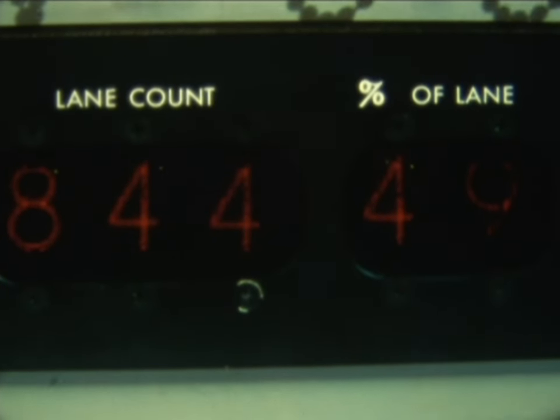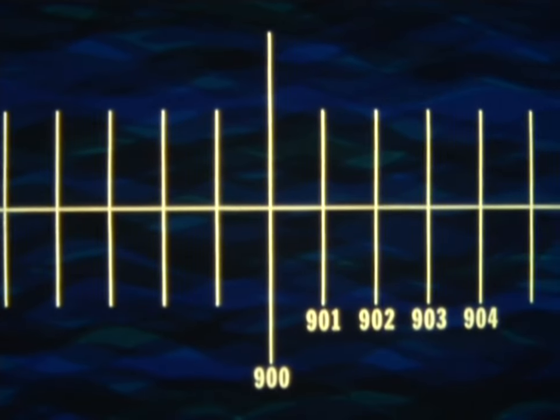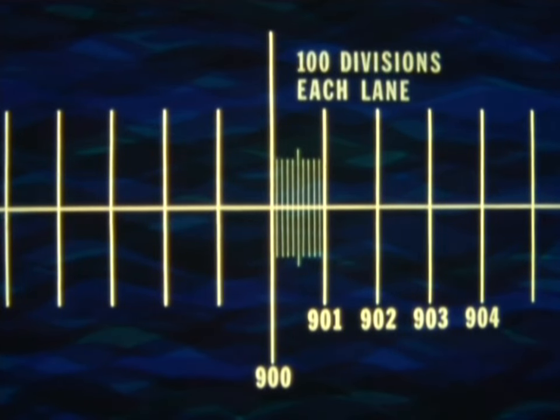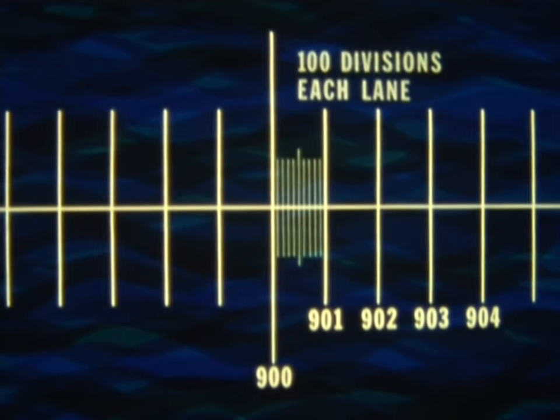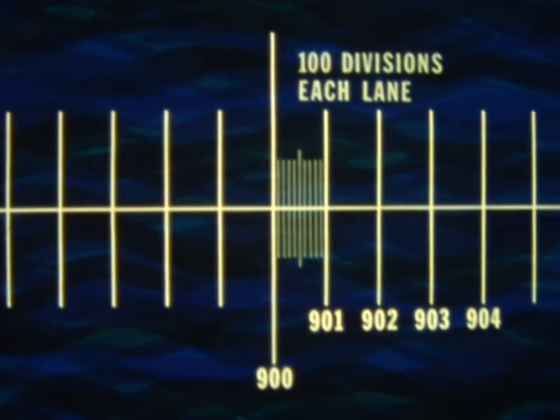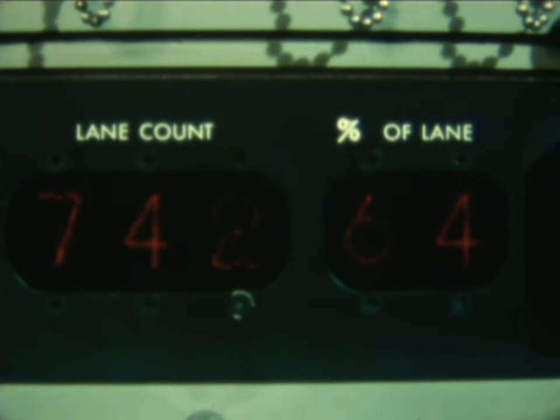Omega receivers also give a percent of lane reading, which permits an LOP to be established within a lane with greater accuracy. Percent of lane is obtained by treating each lane as though it were divided into 100 equal parts. For practical purposes, the percent of lane measurement is used as the measure of phase difference. On the SRN-12, percent of lane is indicated by the two digits on the right.